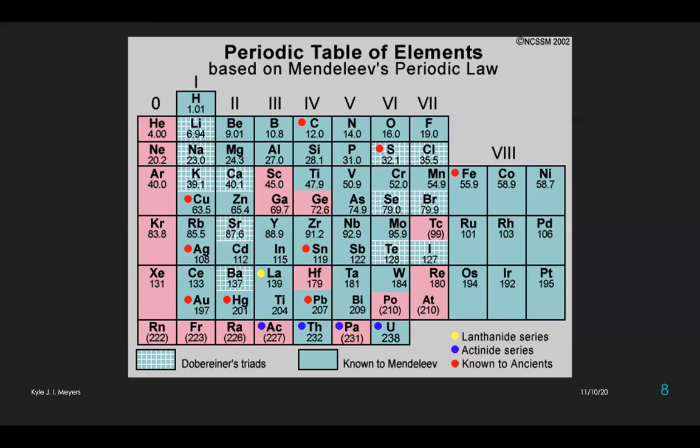If we look at the vertical columns of the groups, each of them were given names. Group 1B was the alkali metals, while group 2B would be the alkaline earth metals. Group 5B, the nicogens, while group 7B, the halogens. Group 0 would be the inert elements.